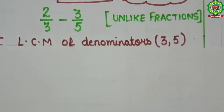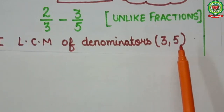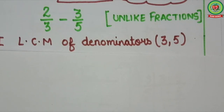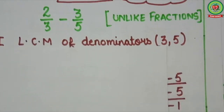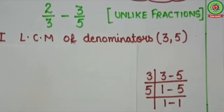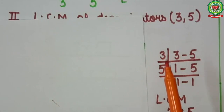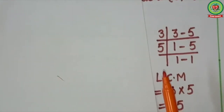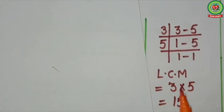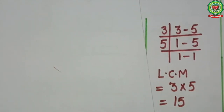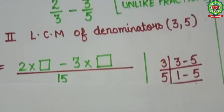Now step 2: we will find LCM of denominators. Here denominators are 3 and 5. So we will find LCM using the antenna method. By antenna method, first it will go on table of 3, then on table of 5. Here LCM is 3 into 5, that is 15.